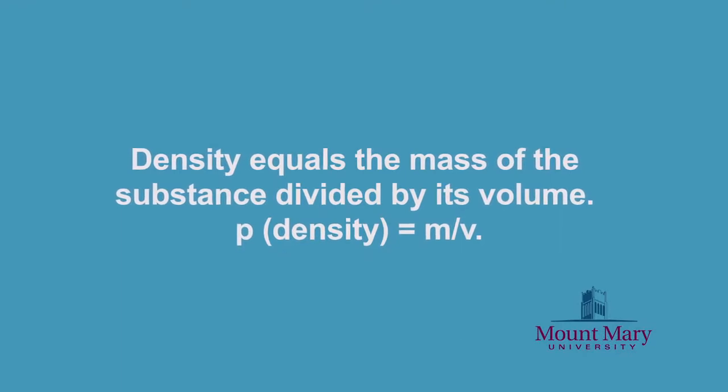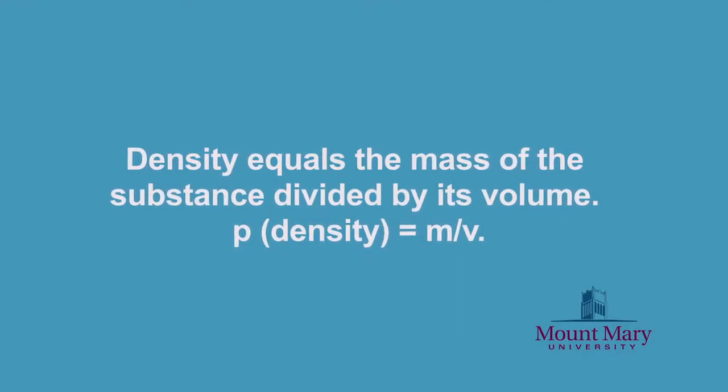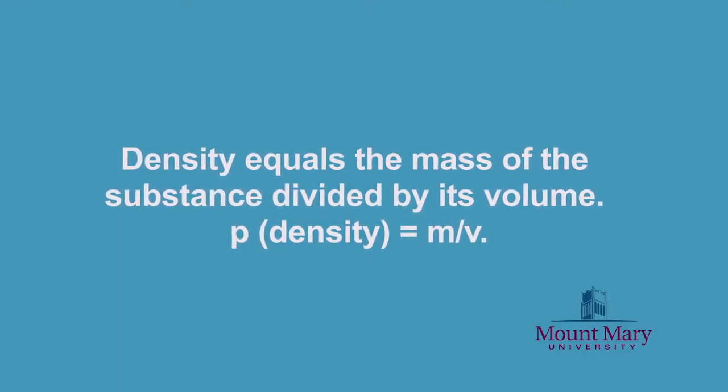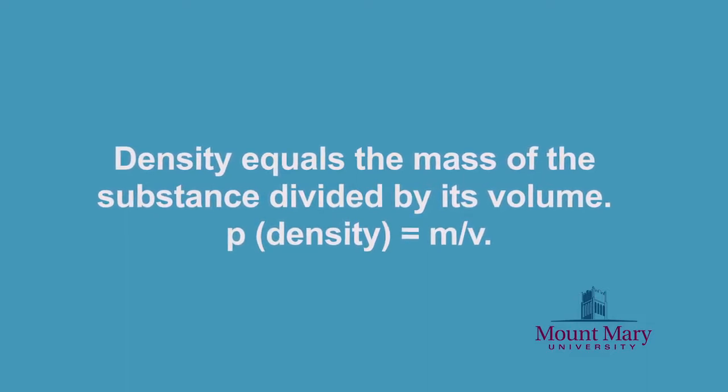So what we're going to do today is talk about density. Density is mass divided by volume. We generally measure it in grams per milliliters, but it's hard to sometimes understand the volume of things — for example, the volume of a piece of rice versus a chocolate chip. So instead we can do some estimating of density just by some real simple experiments.